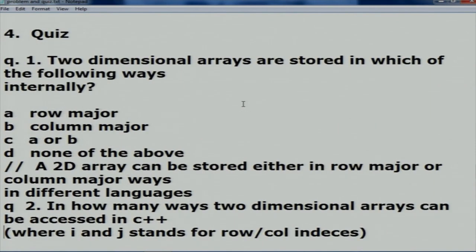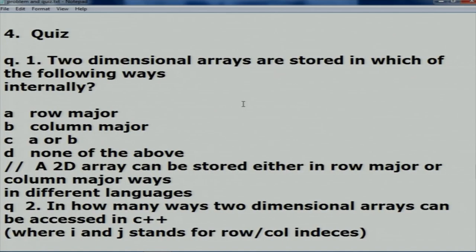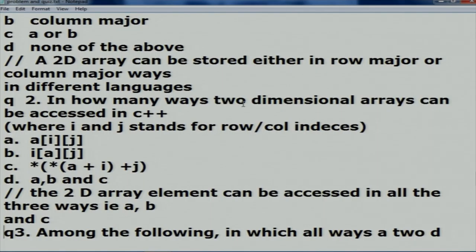The quiz has tough questions. First: in which ways can two-dimensional arrays be represented in a computer? Options: row major, column major, A or B (both), none of the above. The answer is A or B depending on the operating system. Second: in how many ways can two-dimensional arrays be accessed in C++ where I and J are row and column? Options: a[i][j], *(*(a+i)+j), *(a[i]+j), and all of the above. Obviously all three are right — A, B and C.